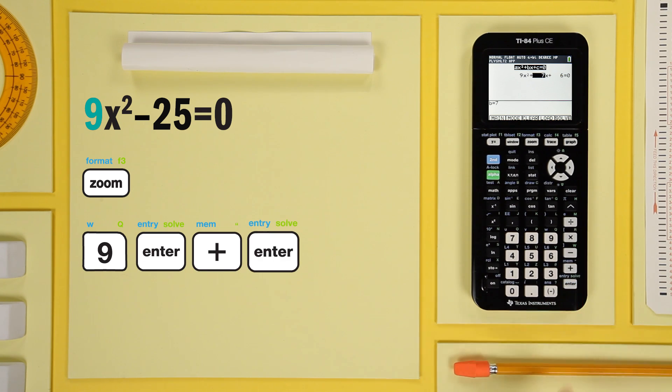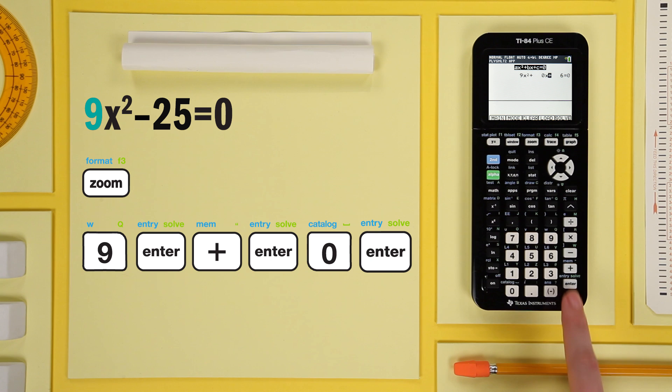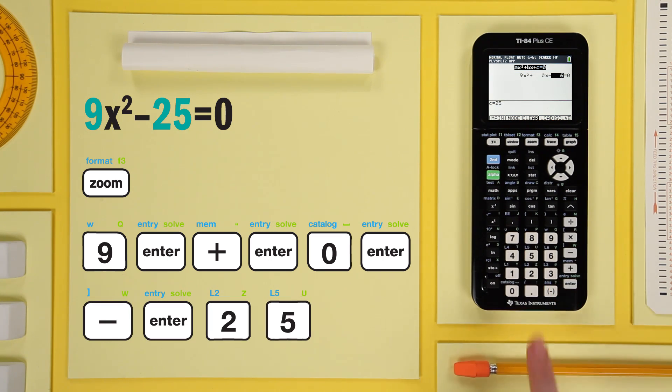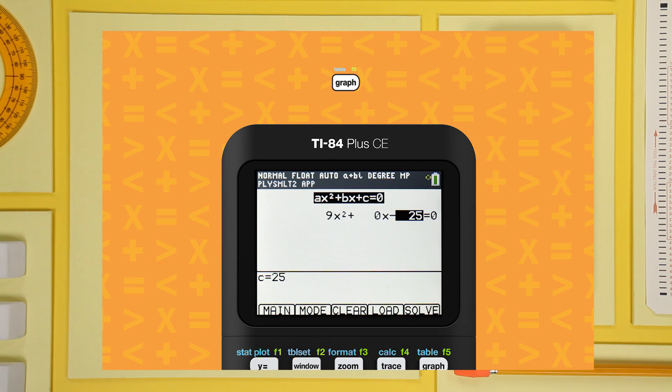Make sure to enter 0 for b and change the plus sign to minus. Press graph. Those are your x-intercepts.